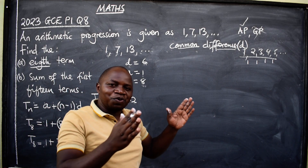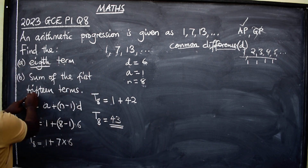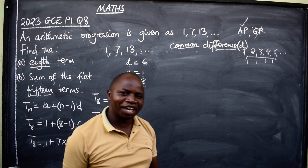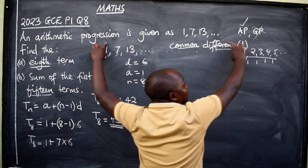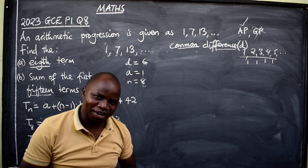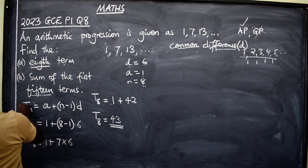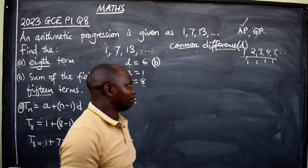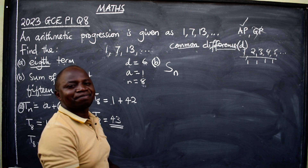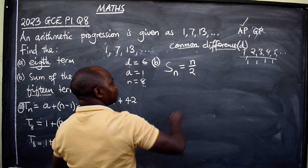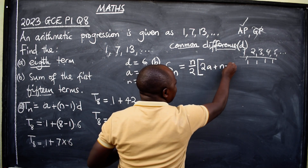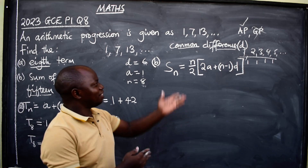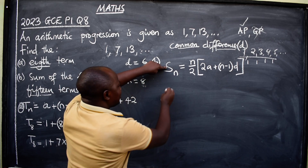Now for part (b): sum of the first 15 terms. We're talking about series — we want to add the first 15 terms together. You could list all 15 and add them, but again use the formula. Under AP, the sum of the first n terms is: S_n equals n over 2 times the square bracket 2a plus (n minus 1)d, close bracket.